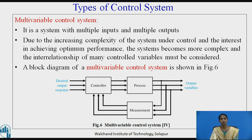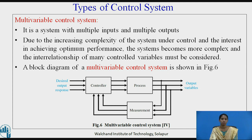Let us see the next type of control system: the multivariable control system. It is a system with multiple inputs and multiple outputs. Due to the increasing complexity of the system under control and the interest in achieving optimum performance, the system becomes more complex and the interrelationship of many control variables must be considered.